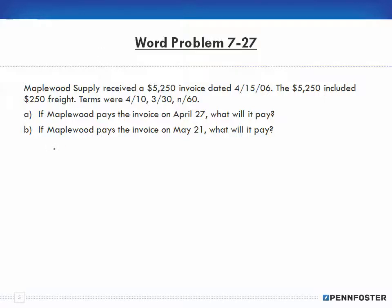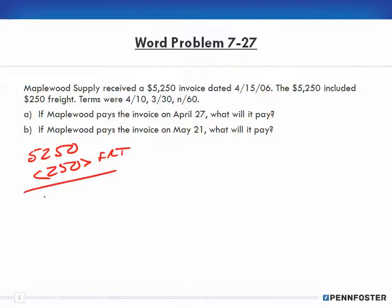We have an invoice of $5,250, and there's $250 in freight. We can't take a discount on freight, so we subtract it out and we have a base price of $5,000. Our terms are 4/10, 3/30, net 60, so we need to figure out what those discount periods are.